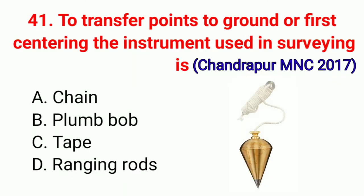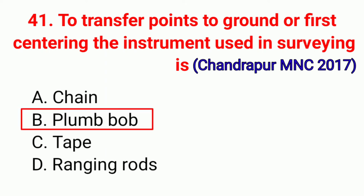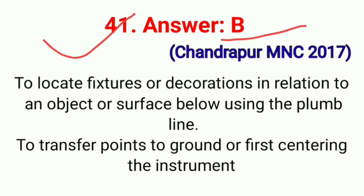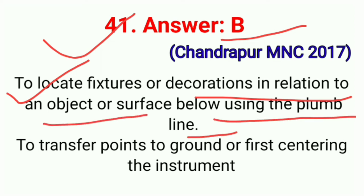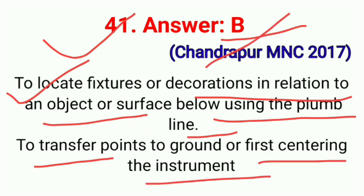Question No. 41. To transfer point to ground or for centering the instrument used in surveying is — correct option B: Plumb Bob. To locate fixtures or decorations in relation to an object or surface below using the plumb line, to transfer point to ground or for centering the instrument. Correct option B.